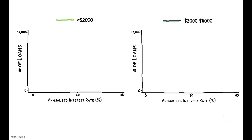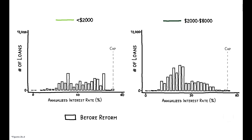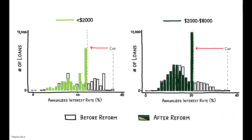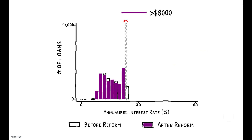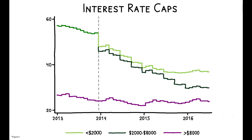These figures show the effect of the reforms on the rates actually paid by borrowers. Comparing the distribution of interest rates before and after the reforms shows that they did in fact force lenders to reduce their interest rates. In contrast, and as seen before, larger loans were relatively unaffected. So the question is, how did these tighter limits on interest rates affect borrowers?